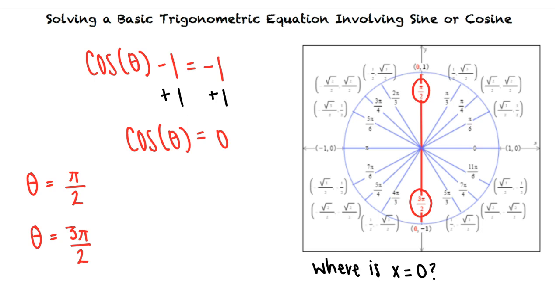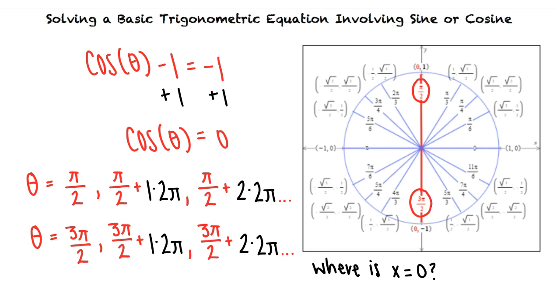These coterminal angles can be obtained by adding integer multiples of 2 pi. Therefore all solutions of cosine theta equals 0 consist of the following angles. Any angle above has the form pi halves plus k 2 pi or 3 pi halves plus k 2 pi where k is an integer.